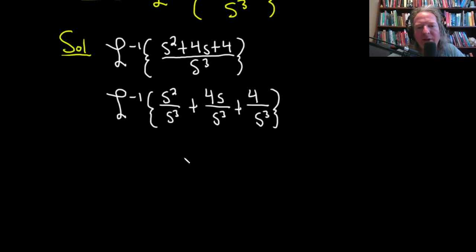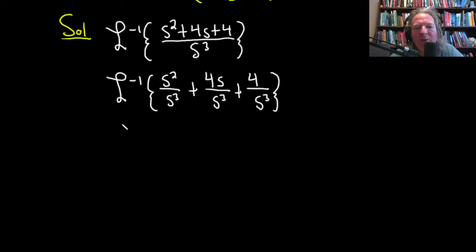Now we can clean it up. And again, we can break it up into three inverse Laplace transforms. And since it's linear, we can also pull out constants. So s squared over s cubed is going to give us the inverse Laplace of 1 over s, really nice.